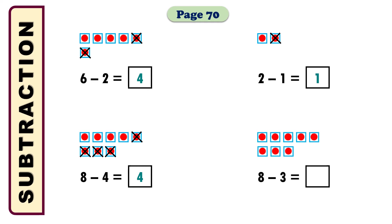In the next example we have 8 minus 3 equals what? I have taken 8 boxes and I need to cross 3 among them: 1, 2, 3. Let's count how many remain — we have 5 boxes remaining, so the answer will be 5. I have taken 8 boxes, crossed 3 among them, and after crossing 3 I have 5 remaining — so the answer is 5.